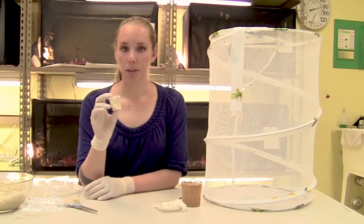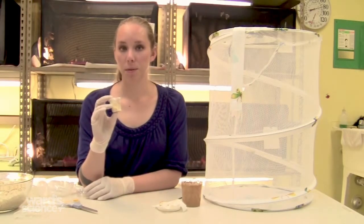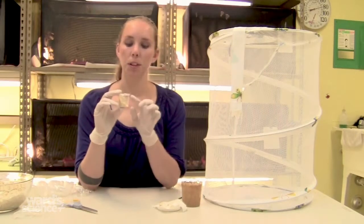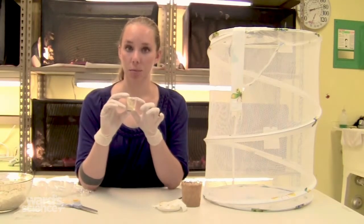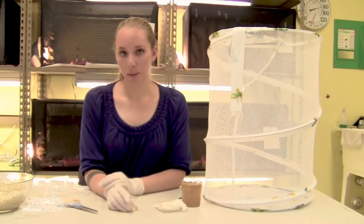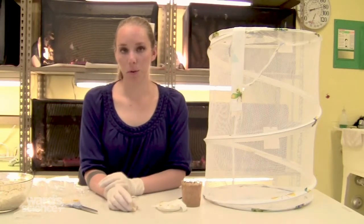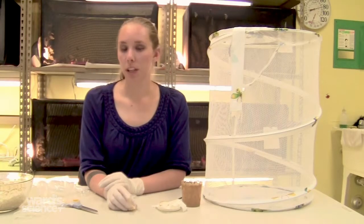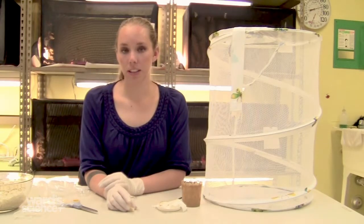Once you've put all the larvae into the cups, it'll be about two weeks before they form chrysalids. They'll move to the top of the cup and attach to the plastic lid. When all the chrysalids have formed, wait about 24 hours before putting them into the cage. You want to give them this time to ensure that the chrysalids have time to harden.